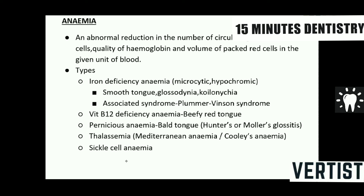Vitamin B12 deficiency anemia sometimes presents with a beefy red tongue — pernicious anemia — and a bald tongue known as Hunter's glossitis, where papillae are lost. Rare types include thalassemia, also called Mediterranean or Cooley's anemia, with a typical radiographic appearance of hair-on-end appearance of the skull. Sickle cell anemia is also a rare type. You should know about iron deficiency anemia, vitamin B12 deficiency anemia, and pernicious anemia.